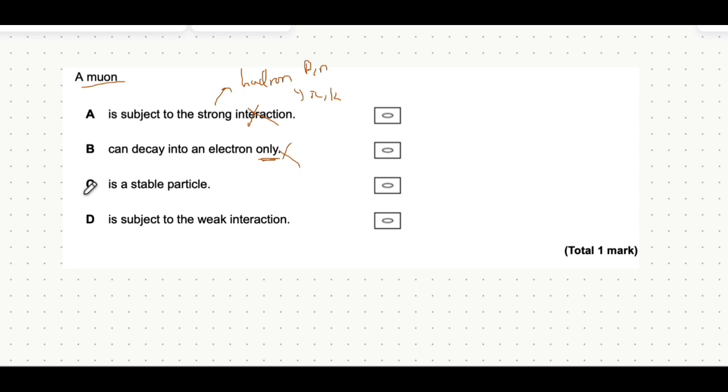It says it's a stable particle. Well, because a muon can decay and it does often decay to an electron, it's actually an unstable particle. So we cross this off and it is actually option D.